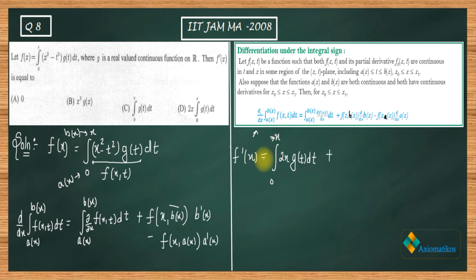This is your b(x). Now you have to place b(x) inside this f(x,t) in place of t. In place of t you place b(x), which is x. So this thing will be zero. And see, what is a'(x)? a(x) is zero, that means a'(x) is also zero. So finally, what you are concluding is that the derivative will be this thing.